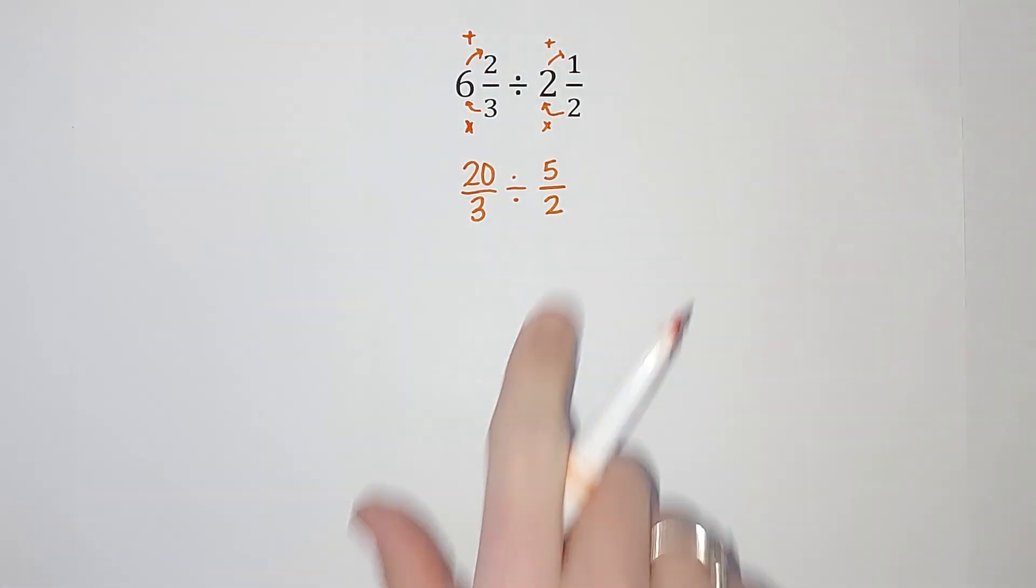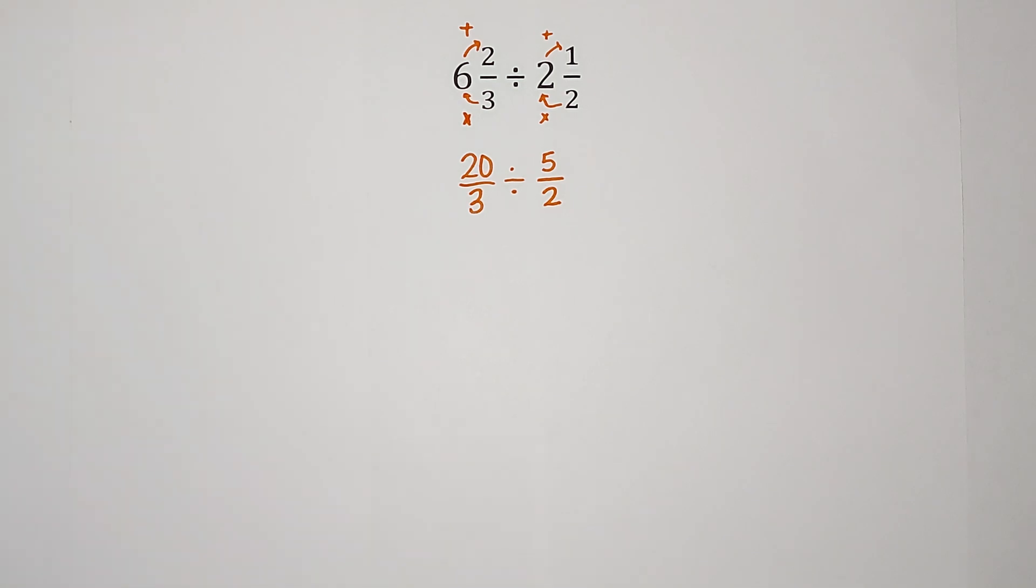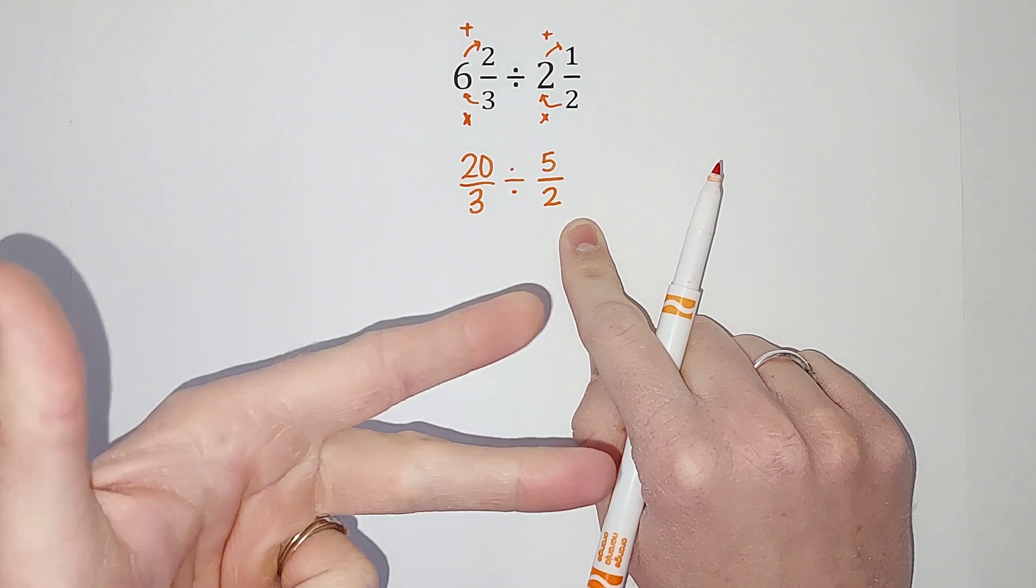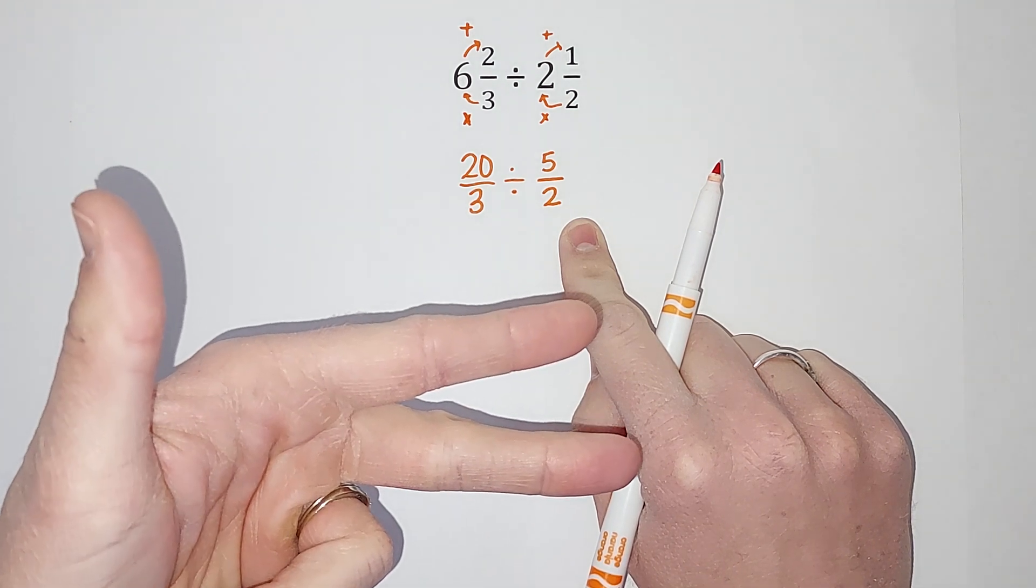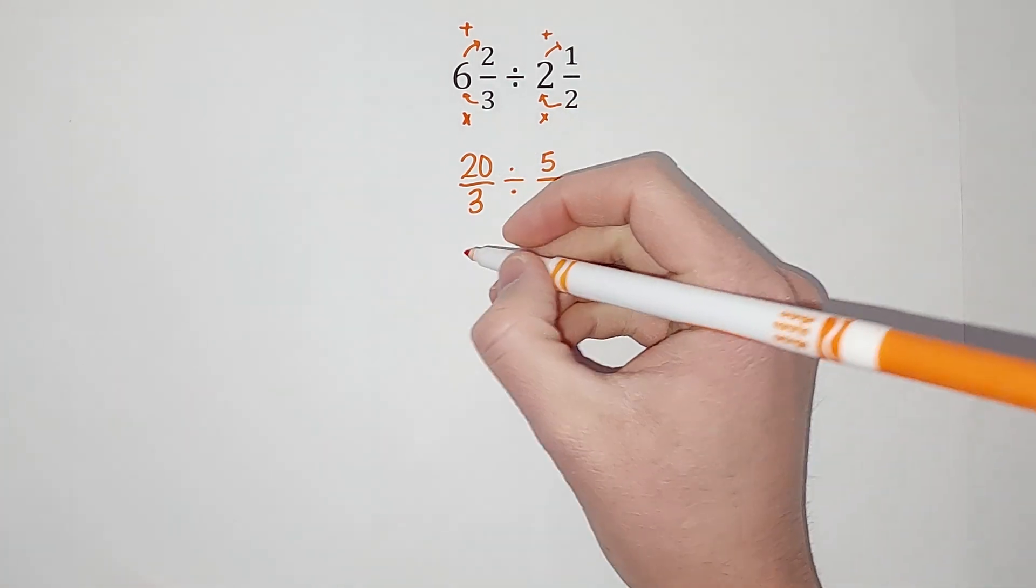It's much easier to divide these when they're improper fractions. The reason they're called improper fractions is because the top is bigger than the bottom, and apparently that is very improper. All right, now this is the part where you're gonna be like that was too easy. When we divide fractions, all you do is you take the second one, you flip it, which is called the reciprocal if you want the big word, and we multiply.